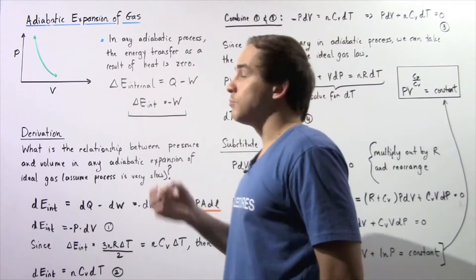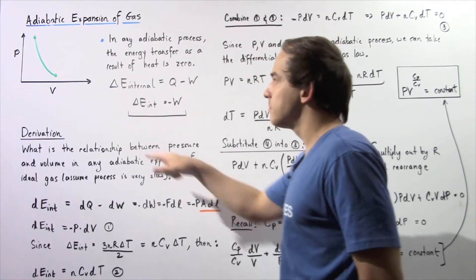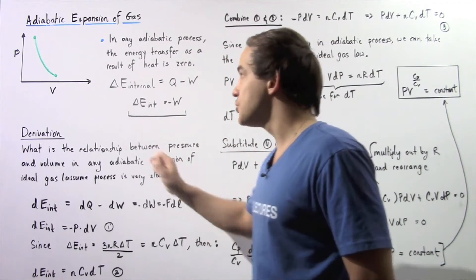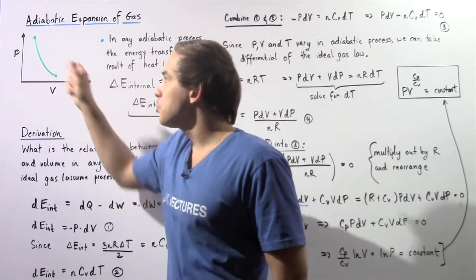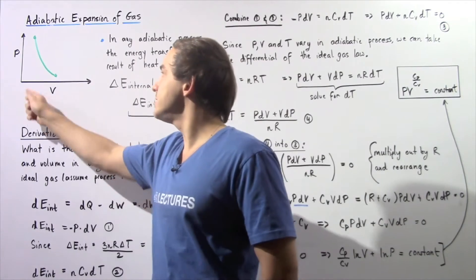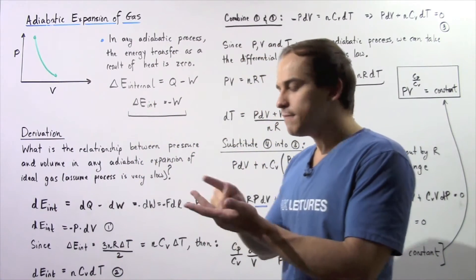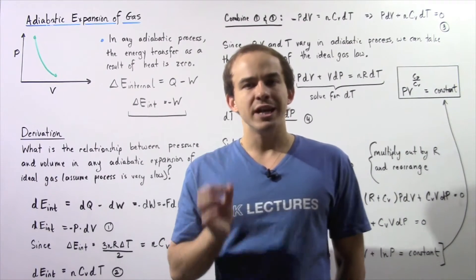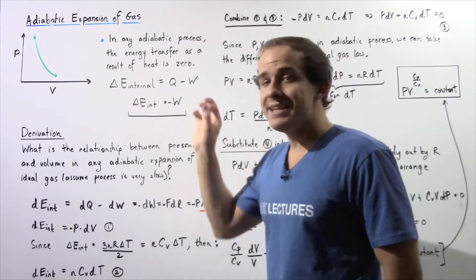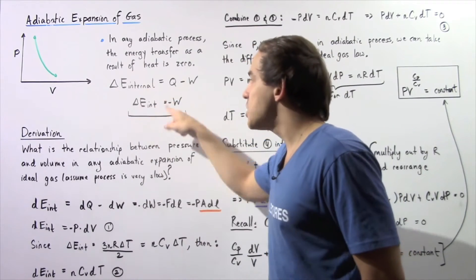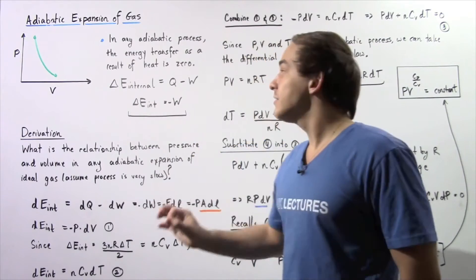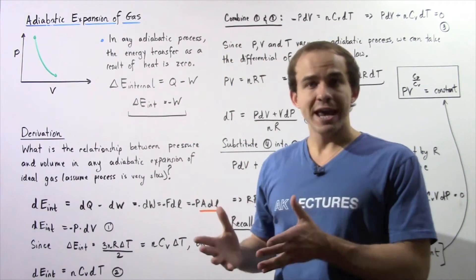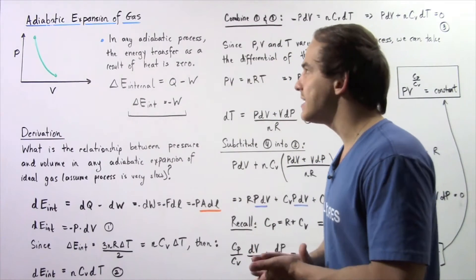We can also plot an adiabatic process on the x-y axis, with volume on the x-axis and pressure on the y-axis. In any adiabatic expansion, as the volume increases, the pressure decreases, and as the volume decreases, the pressure increases. The pressure, volume, and temperature all change in an adiabatic process, because there is a change in internal energy, which means there is also a change in temperature.